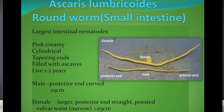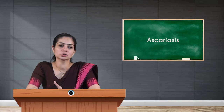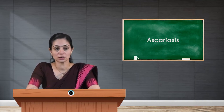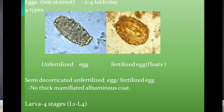To differentiate male from female: as seen in the picture, the male has a curved posterior end and grows up to 25 centimeters. The female is larger, may grow more than 25 centimeters, has a straight and pointed posterior end, and has a vulvar waist. Regarding the egg stage, the eggs of Ascaris lumbricoides are bile-stained and are liberated at around two to four lakh eggs per day. There are four types of eggs found under the microscope.